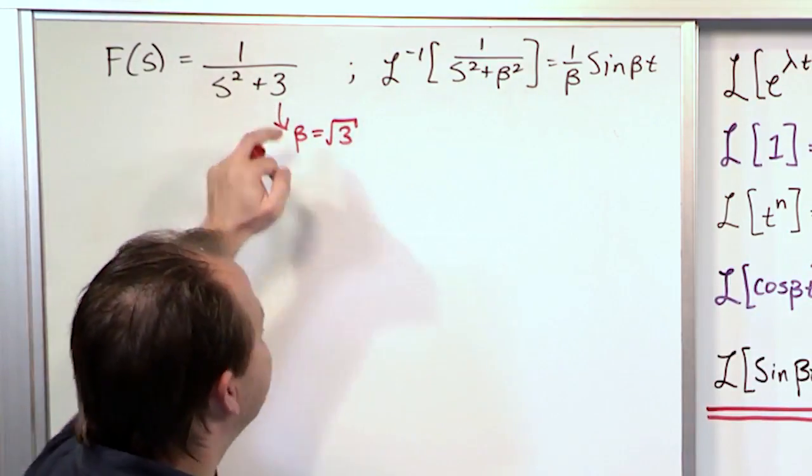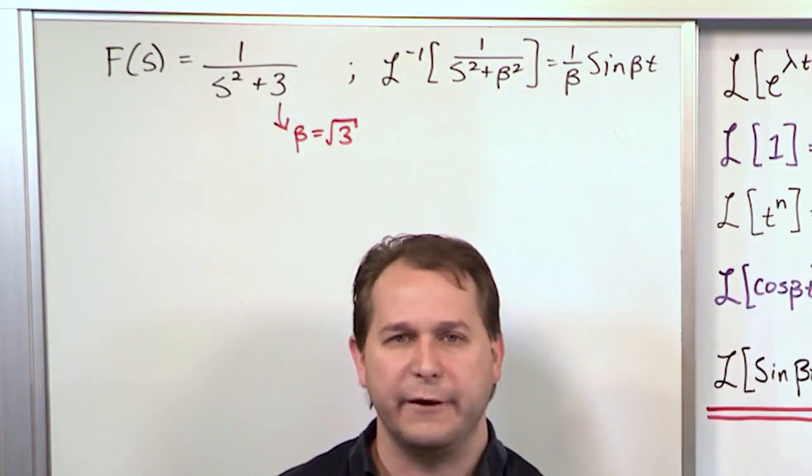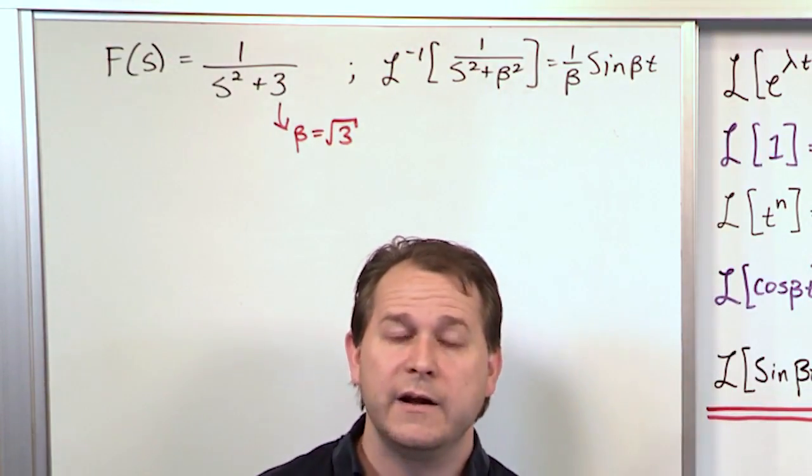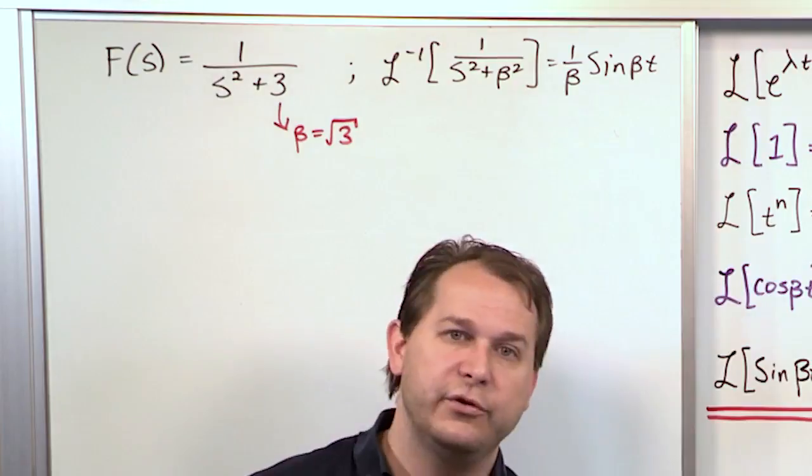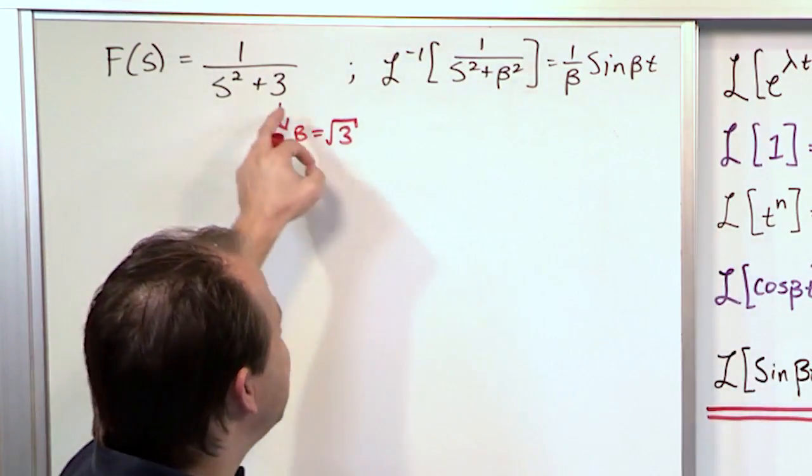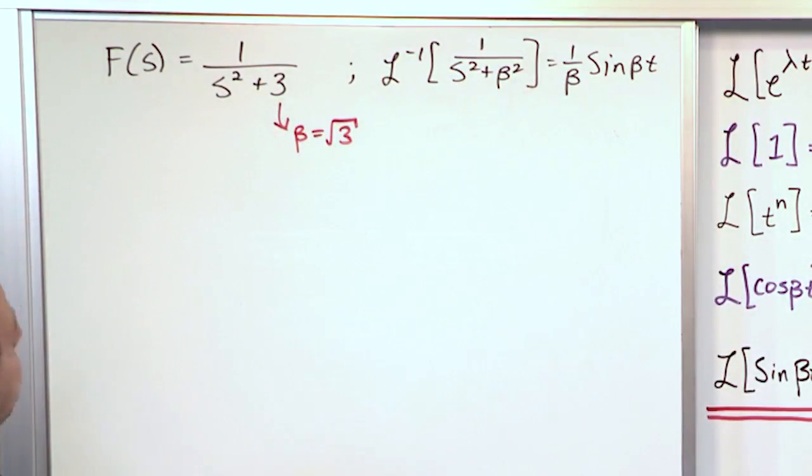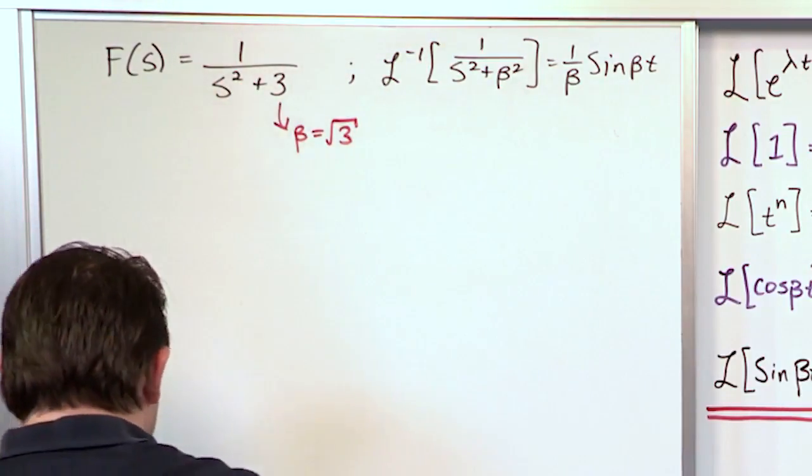So it doesn't have to be a perfect square in there. I know it's pretty obvious if you see a 4 there or a 9, then you can clearly say beta is 2 or beta is 3. But if we have any number here, you can just take its square root and call it beta. And it'll still match the form of what we have over here.